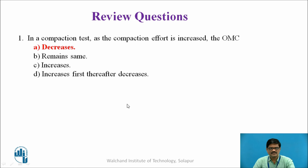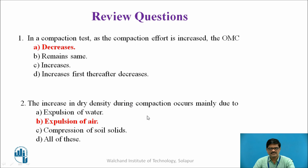These are the answers. The first one: in a compaction test, as the compaction effort is increased, the OMC decreases. As we have seen in the earlier slide, as the compacting energy increases, the optimum moisture content starts decreasing whereas the maximum dry density increases. So option A is the correct answer. For the second question, the increase in dry density during compaction occurs mainly due to expulsion of air. As discussed when we explained the compaction phenomena, this densification takes place basically due to expulsion of air voids — in the compaction process, exclusively the expulsion of air takes place, which results in an increase in the density of the soil.